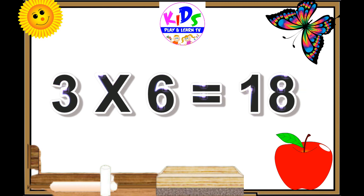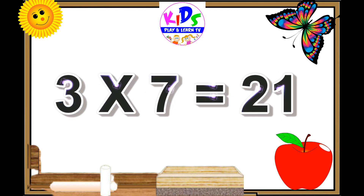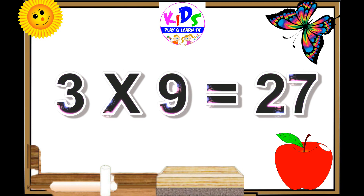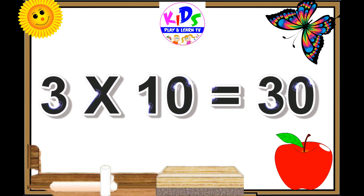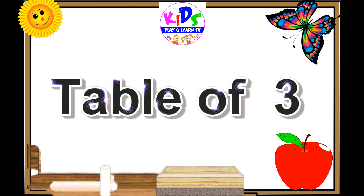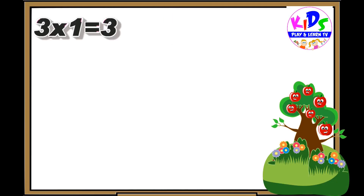Three fives are fifteen, three sixes are eighteen, three sevens are twenty-one, three eights are twenty-four, three nines are twenty-seven, three tens are thirty.